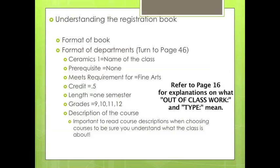Each course is worth 0.5 or one full credit. You can determine how much a course is worth by looking at the amount of credit along with the length of the course. In the example of Ceramics I, it is a 0.5 credit course that lasts one semester, totaling 0.5 credits. If a 0.5 credit class is for two semesters, it will be worth one credit.